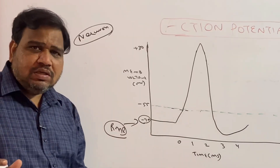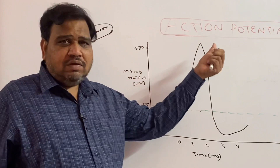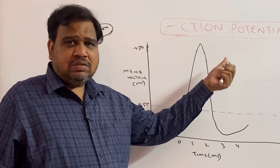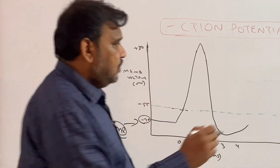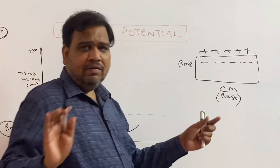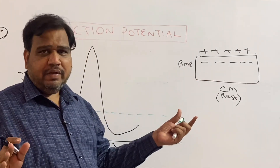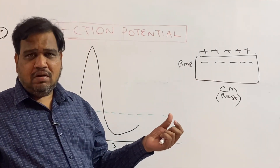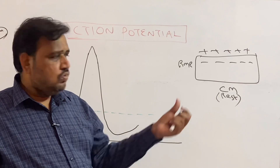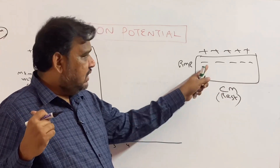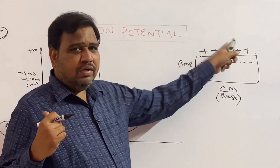Today we are going to discuss how this resting membrane potential is converted to action potential. I have drawn a cell membrane which is at rest, and we know the resting membrane potential (RMP) of a neuron is minus 70 millivolts. This is a neuron at rest — the inside is negative and the outside is positive.